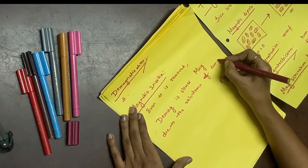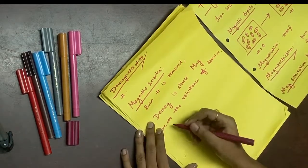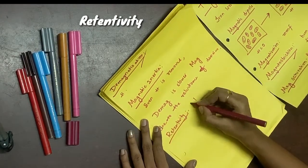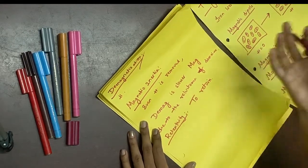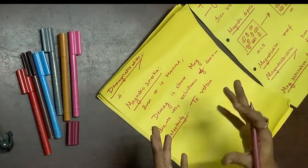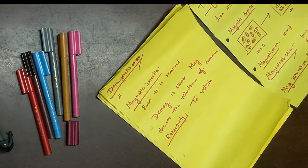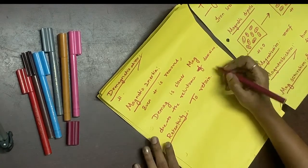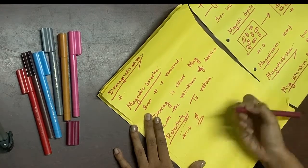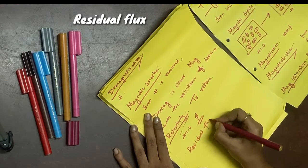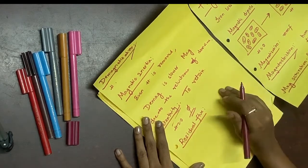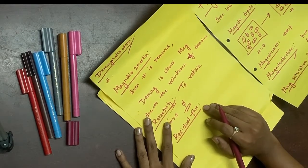This leads to another property called retentivity. Retentivity is the property of a material to retain its magnetic property even when H is zero — some domains still contribute to flux. Due to retentivity, there is some remaining flux even when H equals zero. This remaining flux is called residual flux. The property of the magnetic material to retain magnetic flux even when H equals zero is called retentivity.